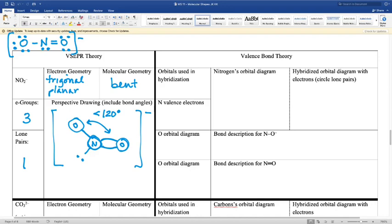The orbitals used in hybridization comes from the number of electron groups. Three electron groups say I need three hybrid orbitals, and that's going to be S and two Ps.